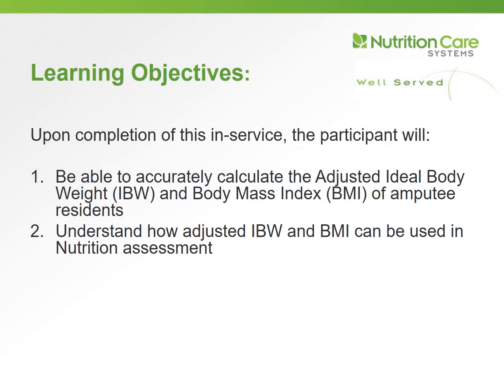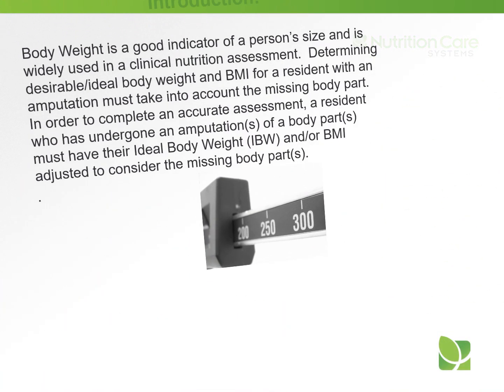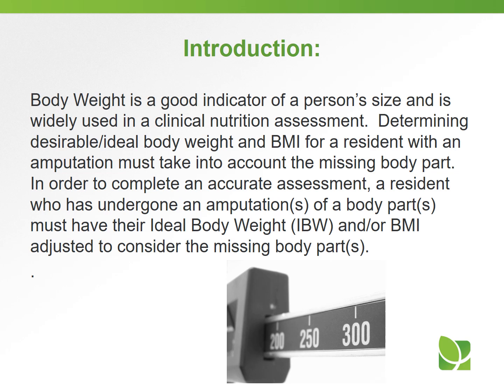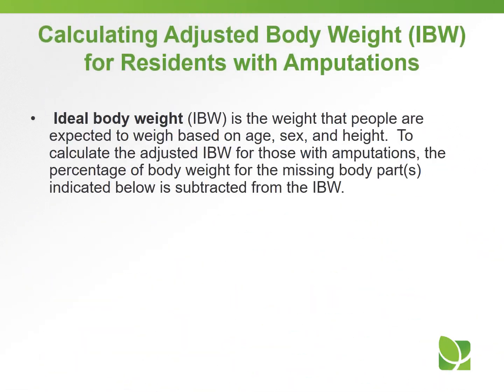Upon completing this in-service training you will be able to: number one, accurately calculate the adjusted ideal body weight and body mass index of an amputee resident; and number two, understand how adjusted IBW and BMI can be used in nutrition assessments. Body weight is a good indicator of a person's size and is widely used in clinical nutrition assessment. Determining desirable ideal body weight and BMI for a resident with an amputation must take into account the missing body part in order to complete an accurate assessment.